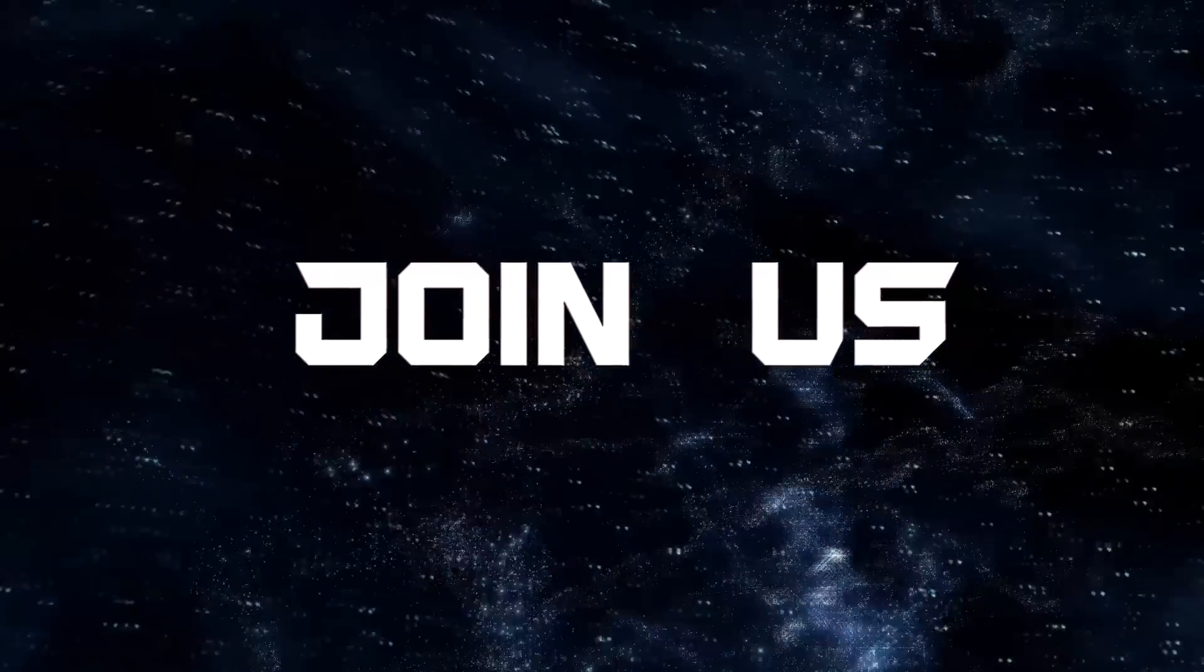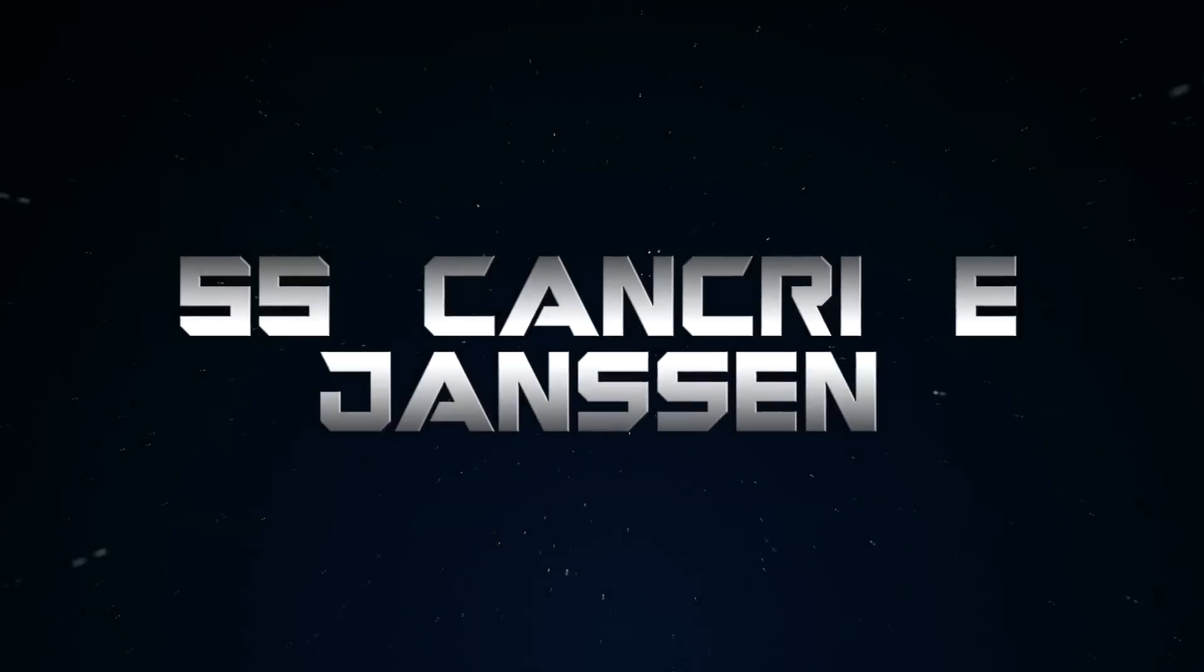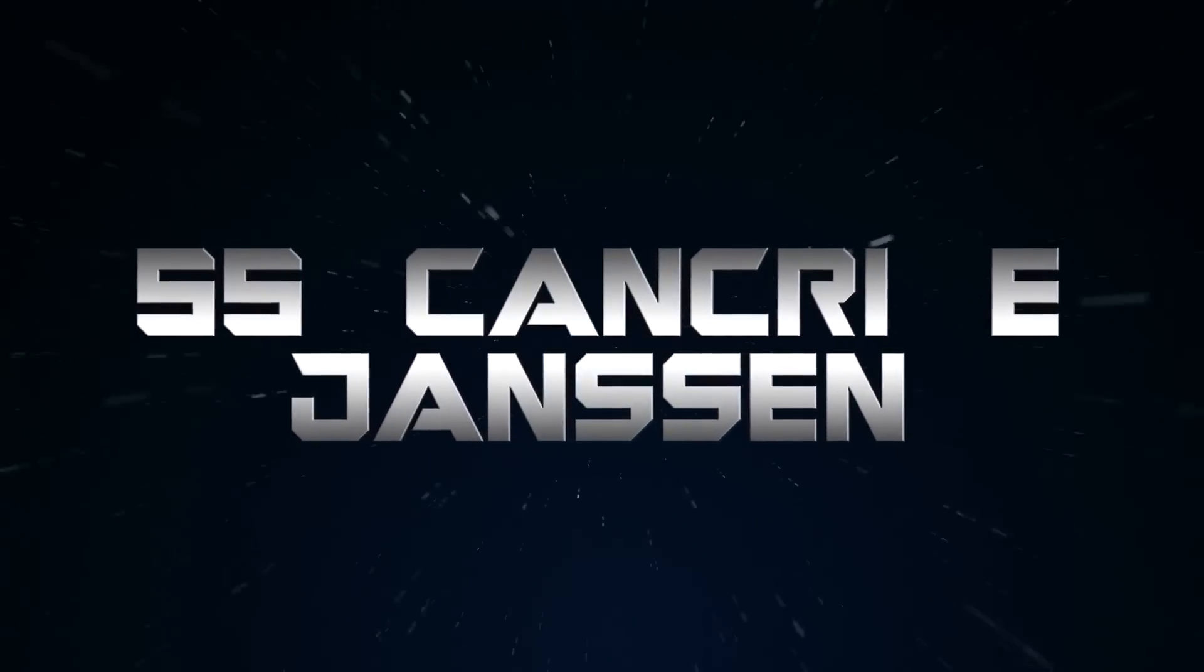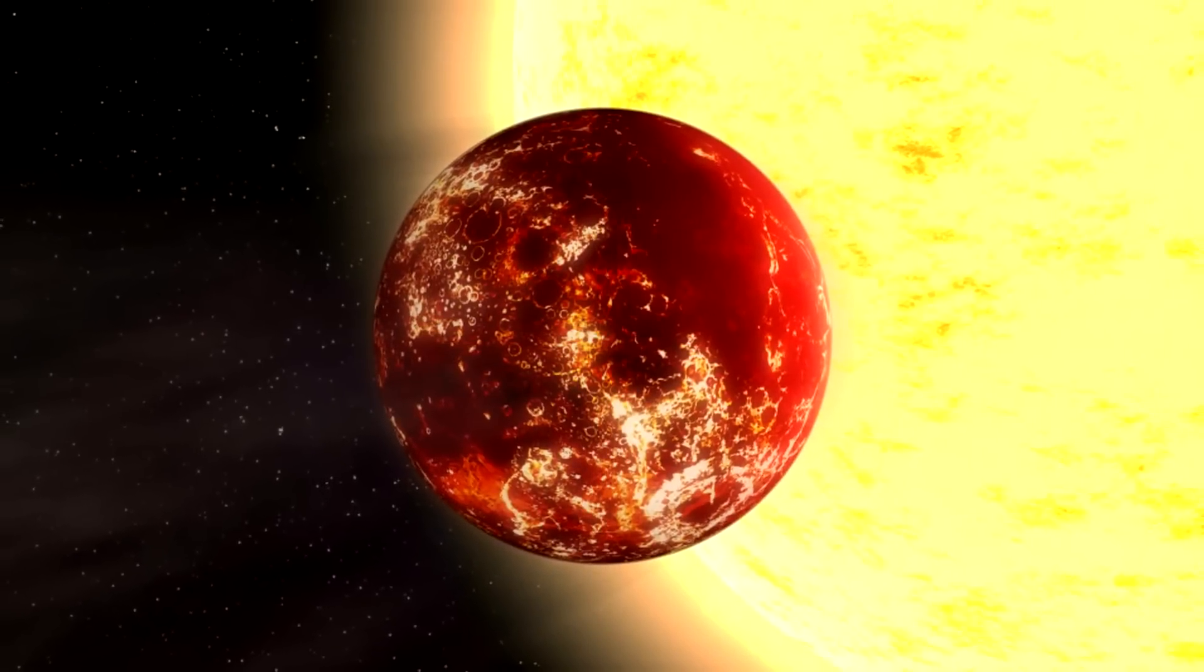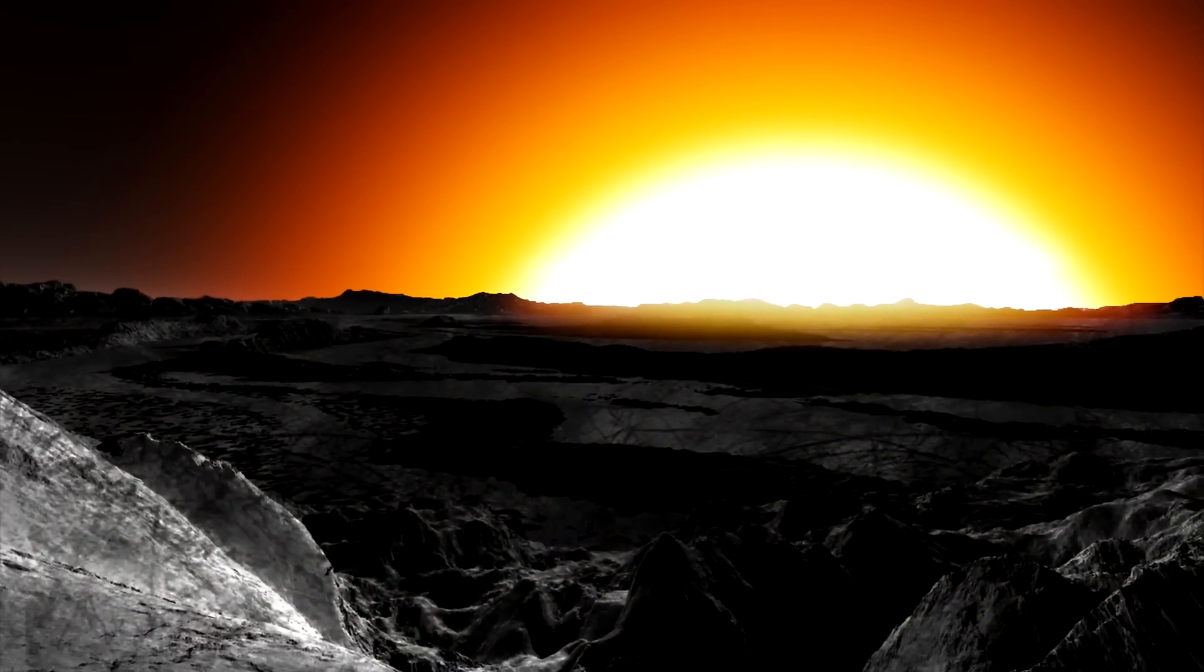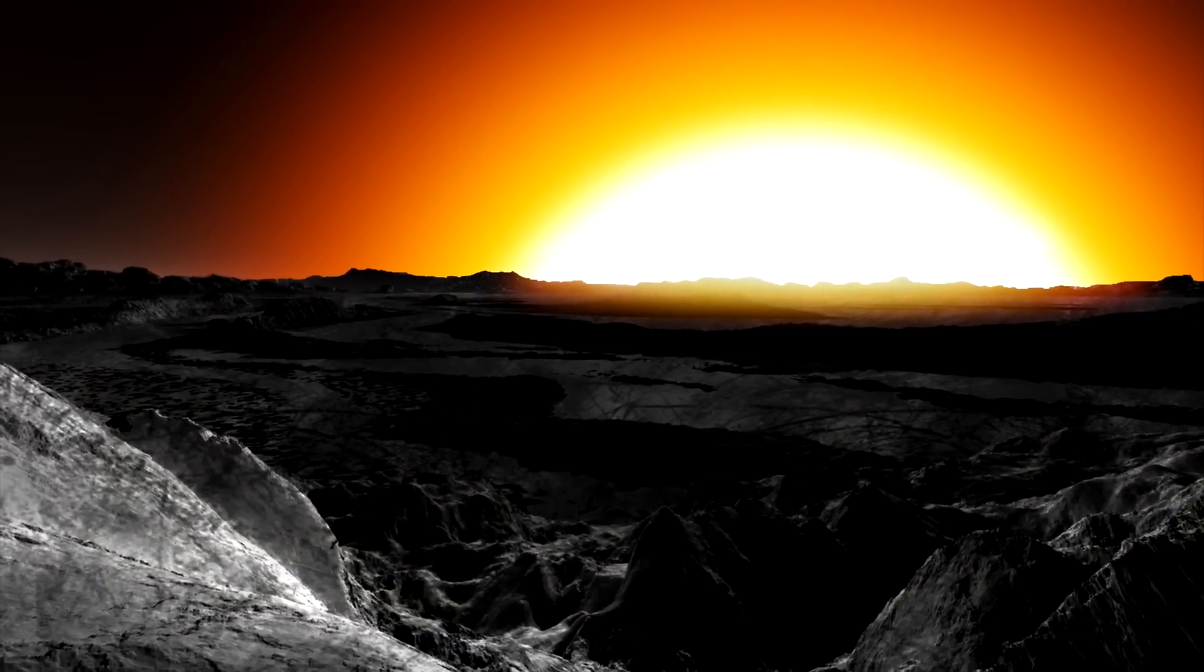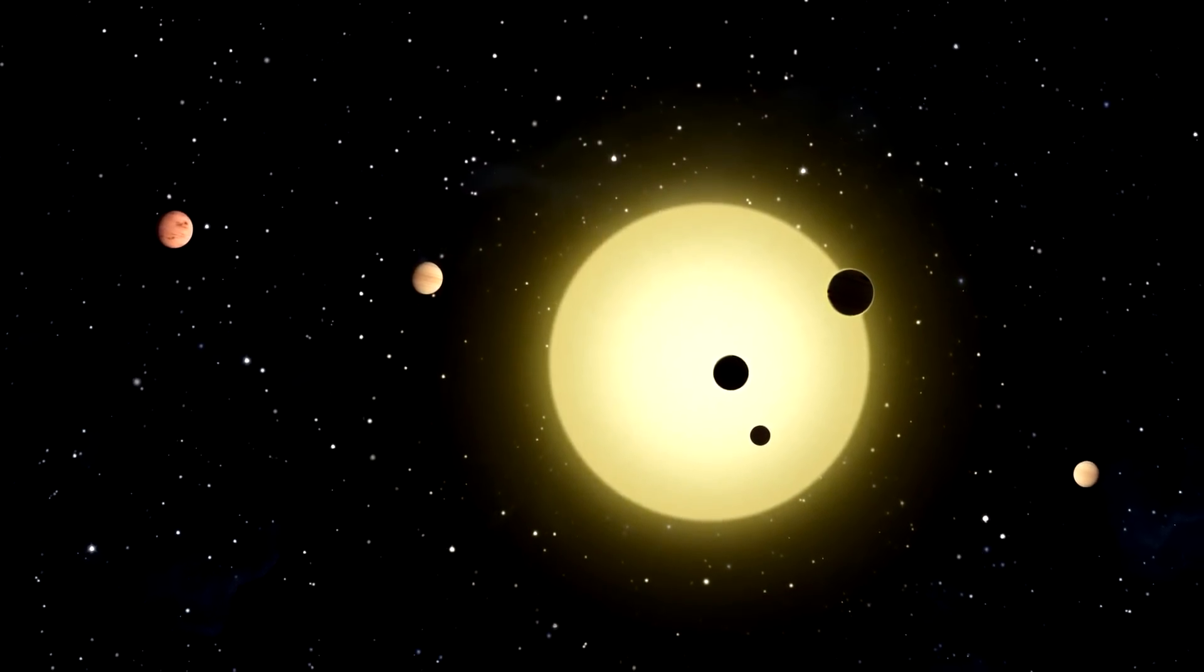Join us as we explore some of the most terrifying facts about outer space. 55 Cancri e, Janssen. 55 Cancri e, a planet that K-Jewelers wishes they could get their hands on. This planet, otherwise known as Janssen, has gained a lot of attention in recent years. That's because of its unique elemental makeup.